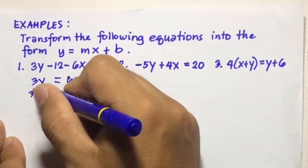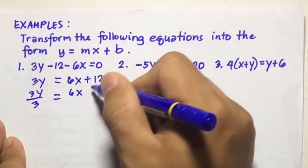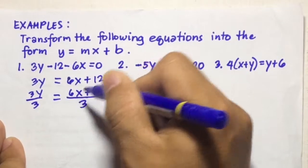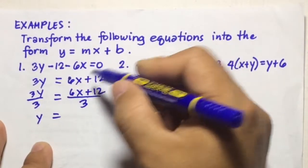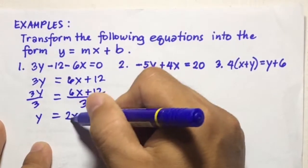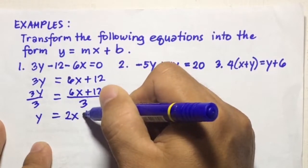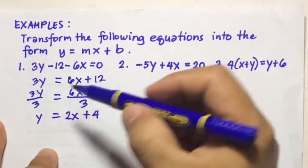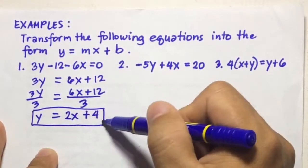Dividing both sides by 3: 3Y over 3 equals 6X plus 12 divided by 3. The result is Y equals 2X plus 4, since 6 divided by 3 is 2 and 12 divided by 3 is 4. So the answer for number 1 is Y equals 2X plus 4.